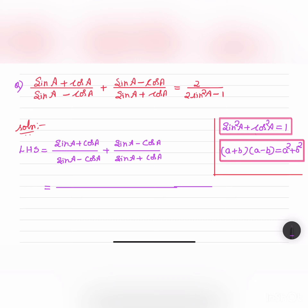The problem is: (sin A + cos A) / (sin A - cos A) + (sin A - cos A) / (sin A + cos A) = 2 / (2 sin²A - 1). This is the RHS part that we have to prove.